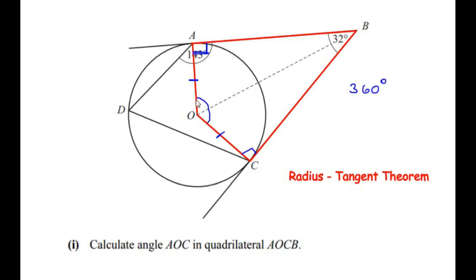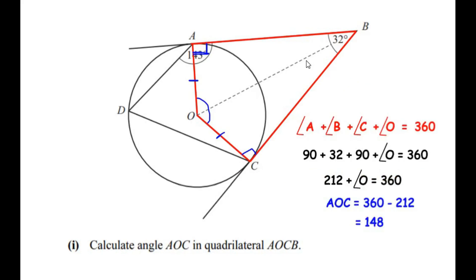Since AOCB is a quadrilateral, the total angles must add up to 360 degrees. So in quadrilateral AOCB: angle A plus angle B plus angle C plus angle O equals 360 degrees. Angle A is 90, angle B is 32, and angle C is 90. So 90 plus 32 plus 90 plus angle O equals 360. Adding 90, 32, and 90 gives 212, so angle O equals 360 minus 212, which gives us an angle of 148 degrees.